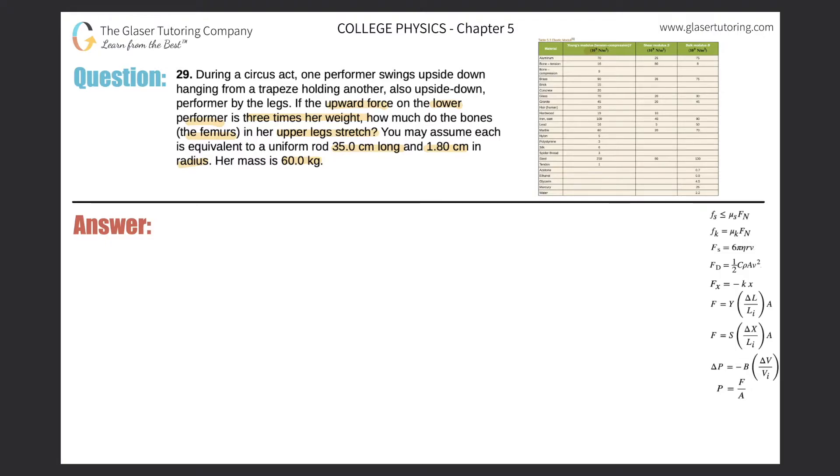First, let's detail a simple free body diagram. We'll say that this point represents her femurs. There's a certain weight pulling her straight down. W is equal to mg. What's the weight of the performer? 60 kilograms. They told us right here in the problem.